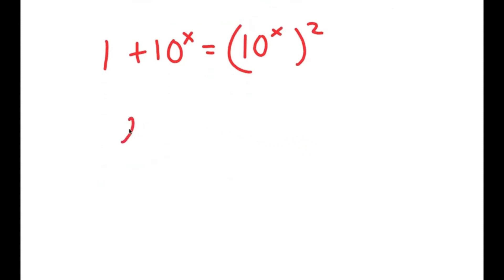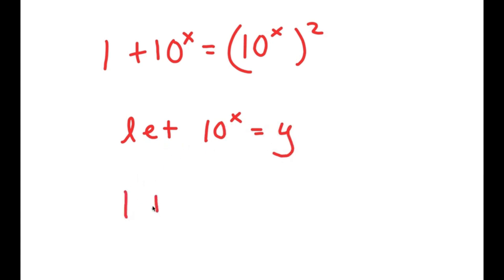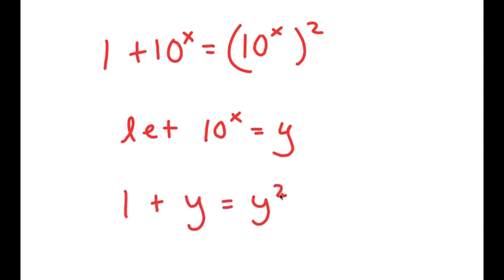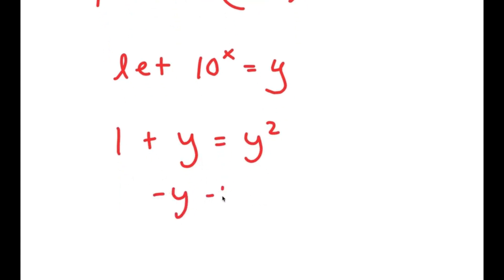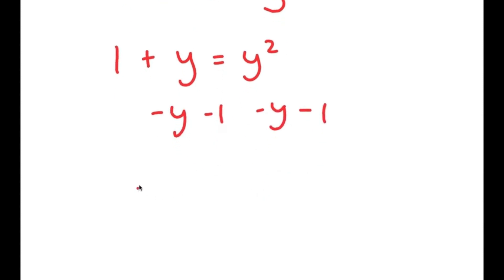Now I'm going to let 10 to the power of x equal to the variable y. So if I substitute y for 10 to the power of x, I get 1 plus y is equal to y squared. Now I'm going to subtract y and 1 on both sides, so I get y squared minus y minus 1 is equal to 0.